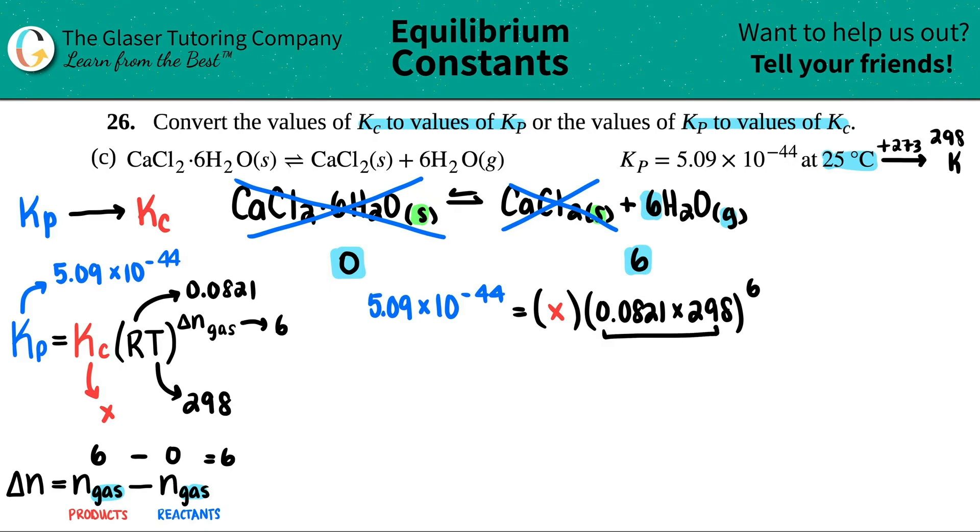So I would do parentheses first, and then you raise it to the sixth. So I got 5.09 times 10 to the negative 44th. This equals the Kc value. And then 0.0821 times 298. I get a pretty big number. I'll keep it pretty consistent. 24.4658. And that's all raised to the sixth. So let's do that now.